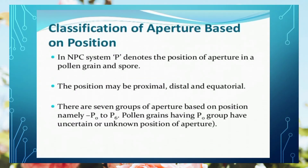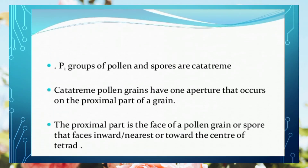Now let's discuss the classification of aperture based on position. P denotes position of aperture. Under position, we observe whether the aperture is on the proximal end, distal end, or equatorial end. Here also we further group from P0 to P6. P0 is used when the position is uncertain or not clearly determined.